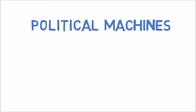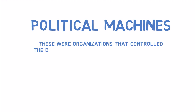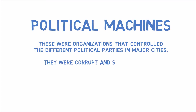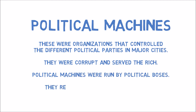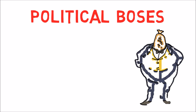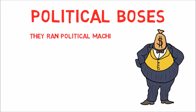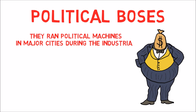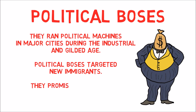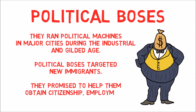Political Machines were organizations that controlled the different political parties in major cities. They were corrupt and served the rich, and were run by political bosses who relied heavily on new immigrants. Political bosses targeted new immigrants and promised to help them obtain citizenship, employment, and housing.